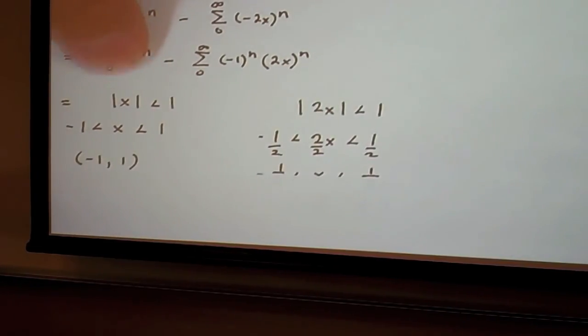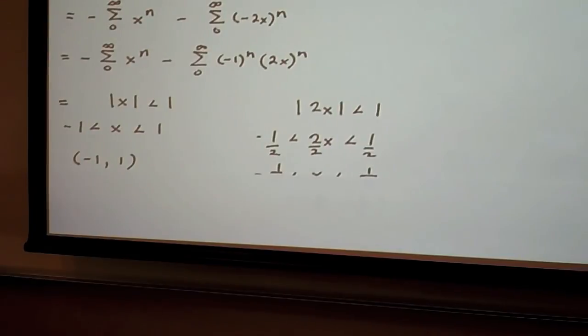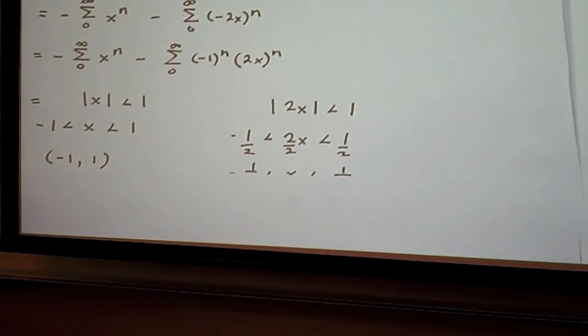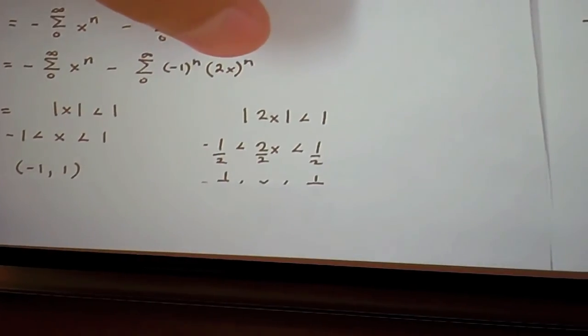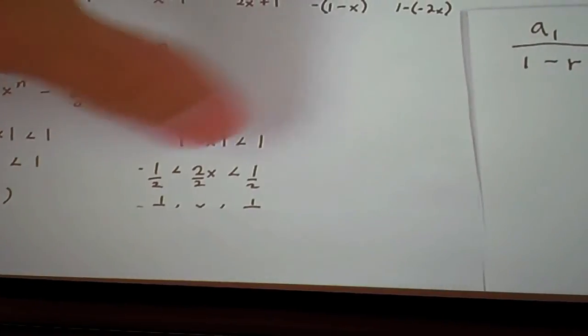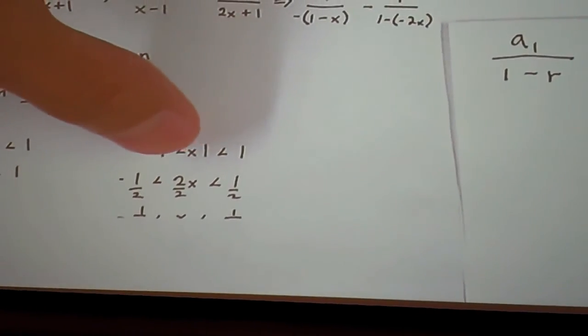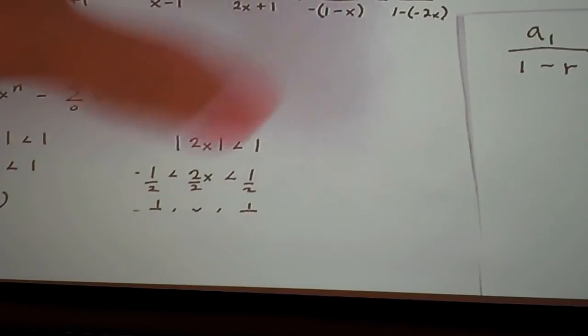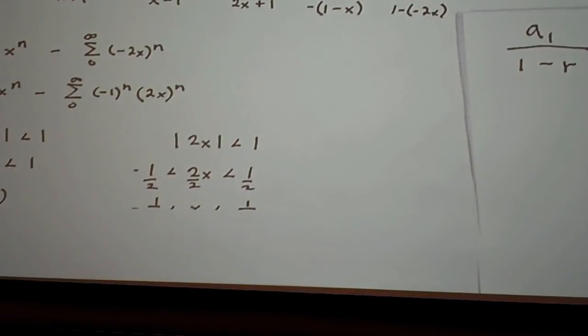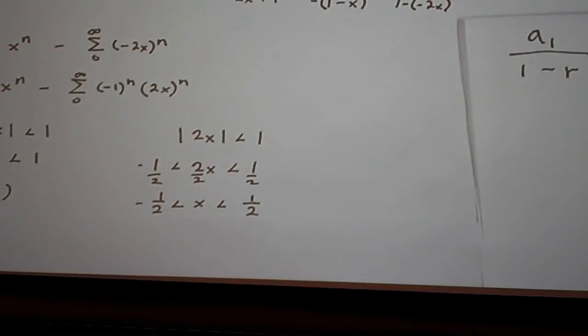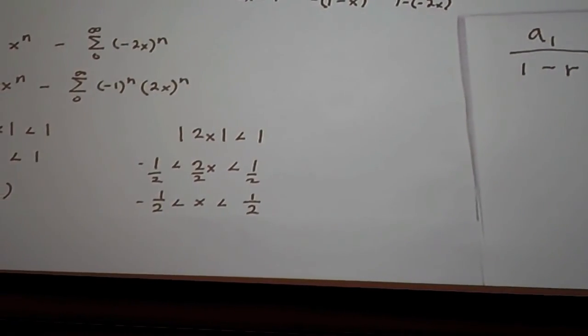So the interval of the first term is negative 1 to 1. And for the second term we set the absolute value of 2x less than 1 and 2x will be greater than negative 1 and less than 1. And we divide all terms by 2. So we'll end up with negative 1/2 is less than x and x is less than 1/2.